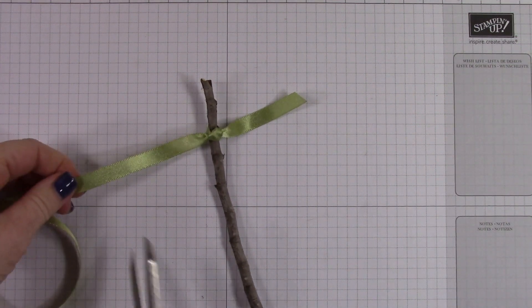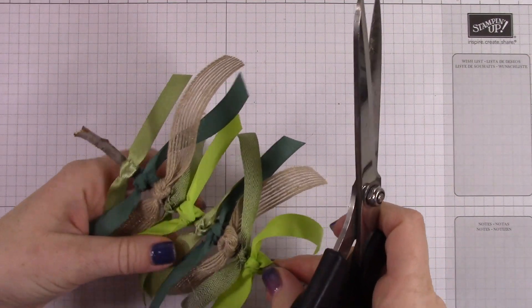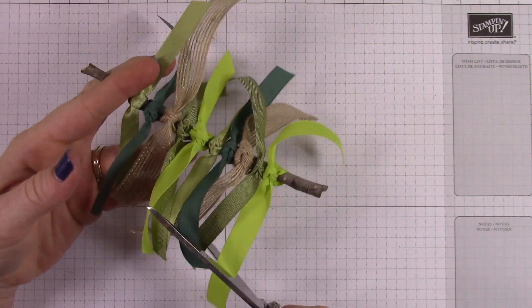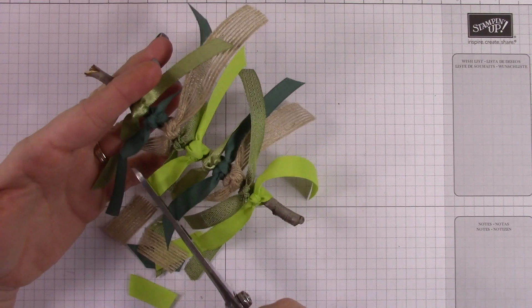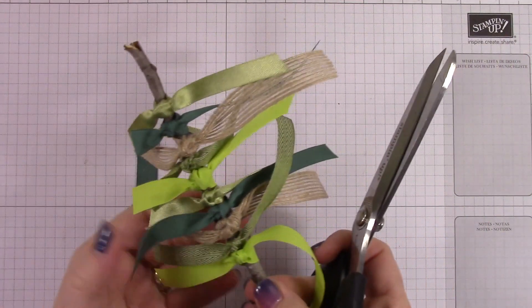So yeah, this is a twig off a tree outside, and then I took a whole bunch of Stampin' Up! ribbons which are linked in the description below the video if you want to buy any of them. I'm just going to trim them all at an angle going up, kind of making a triangle shape or a tree shape.